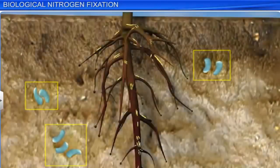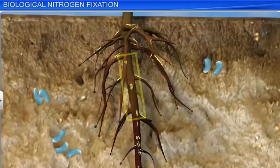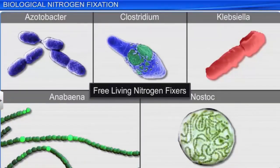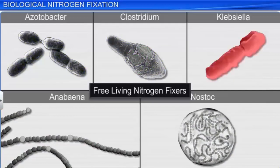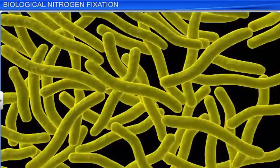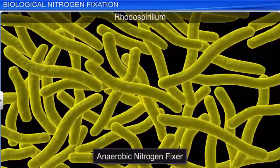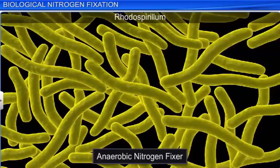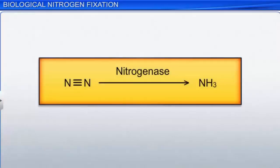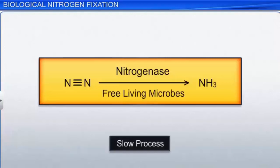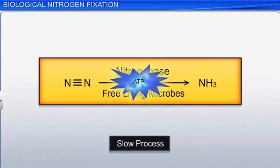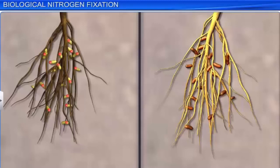Nitrogen fixers live independently or as symbionts. Examples of free living aerobic nitrogen fixers are bacteria such as azotobacter, clostridium, klebsiella, and blue green algae such as anabaena and nostoc. The bacteria rhodospirillum is an anaerobic nitrogen fixing agent, but it can also exist in aerobic conditions. Nitrogen fixation is slow in free living microbes due to the energy requirements. Nitrogen reduction needs ATP to supply energy. Some nitrogen fixing bacteria exist as symbionts.